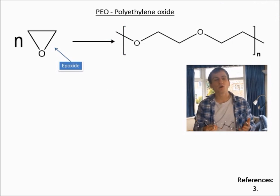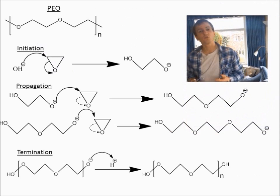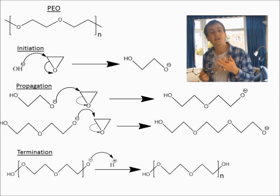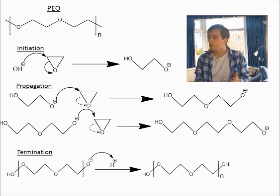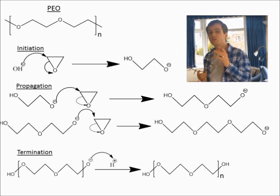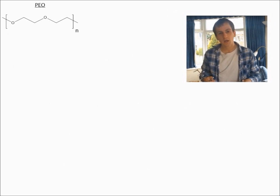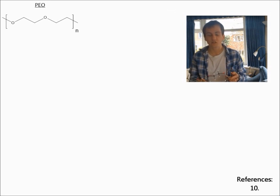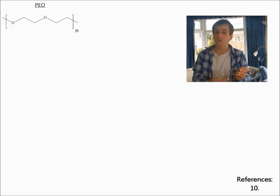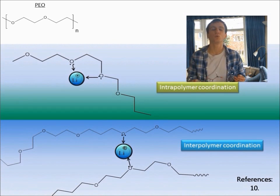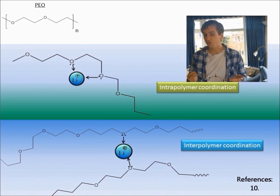PEO can be synthesised by the polymerisation of epoxide, the mechanism of which I'm showing you here, where OH- is acting as a nucleophile and as my initiator, and the chain is growing during the propagation steps, until I decide to stop chain growth by treating the reaction solution with acid. PEO is the most commonly used polymer electrolyte, it just ticks all the boxes. We have oxygen atoms that can coordinate the lithium ions, either by inter- or intra-polymer coordination.